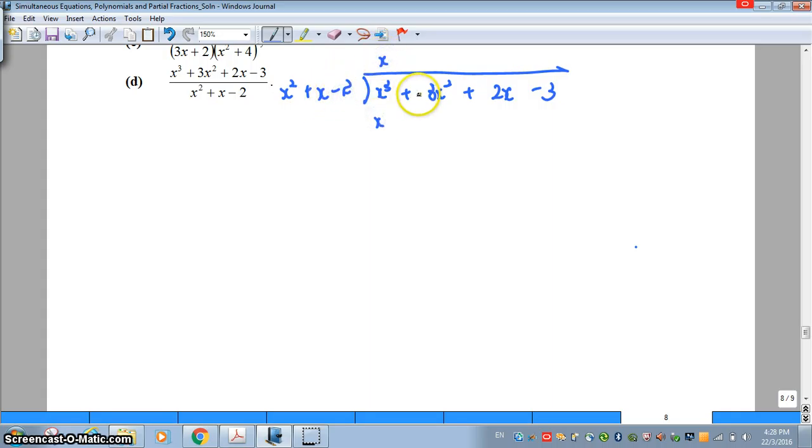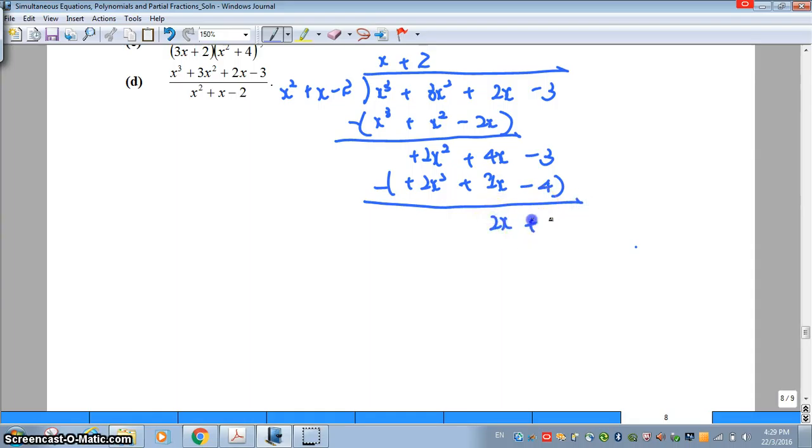Multiply by x to the divisor. Positive 2x squared plus 4x and bring down the very next term plus 2. Notice your remainder in this case is 2x plus 1.